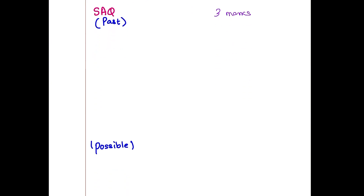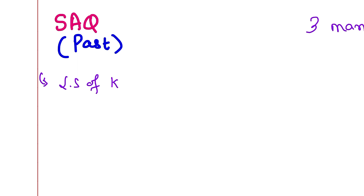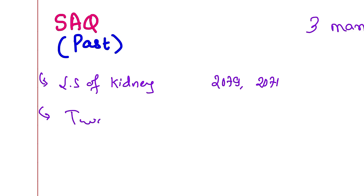Moving on to short answer questions: the LS (longitudinal section) of the kidney is very important and has appeared in exams from 2071 to 2079 multiple times. Recently there are also questions on two kidney diseases — you can describe kidney stone and urinary tract infection such as pyelonephritis (upper urinary tract infection) for 3 marks.